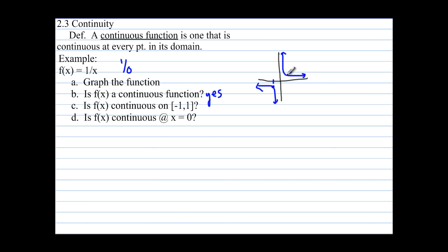Well, -1 is about right there, and 1 is there, and so we're going to say no, it is not continuous from -1 to 1 because there is a discontinuity at 0. There's no values there. Is f(x) continuous at x = 0? We've already answered that. No.